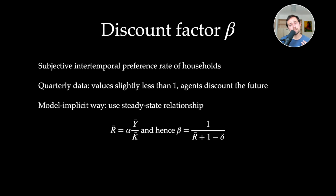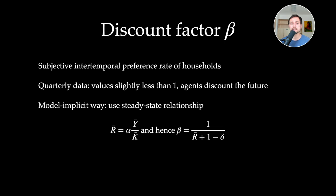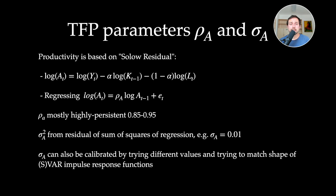The discount factor beta is a measure of households' subjective intertemporal preference rate. For quarterly data, people tend to set this value very close to one but slightly less, to reflect that agents discount the future. A better approach is to calibrate beta using a model-implicit method — looking at the steady-state interest rate and the Euler equation in steady state gives us the equation to calibrate beta.